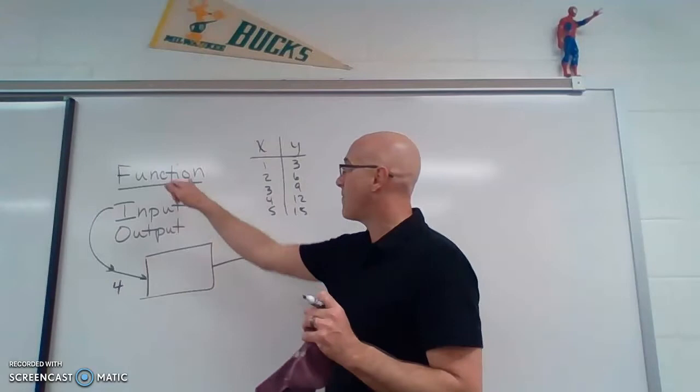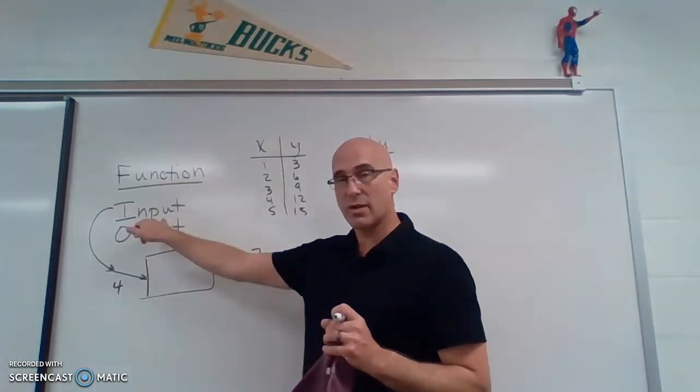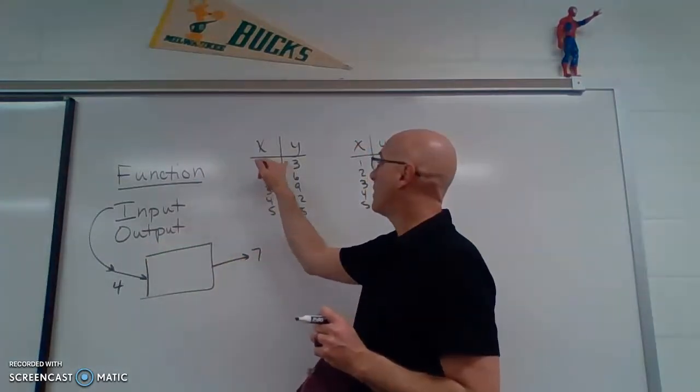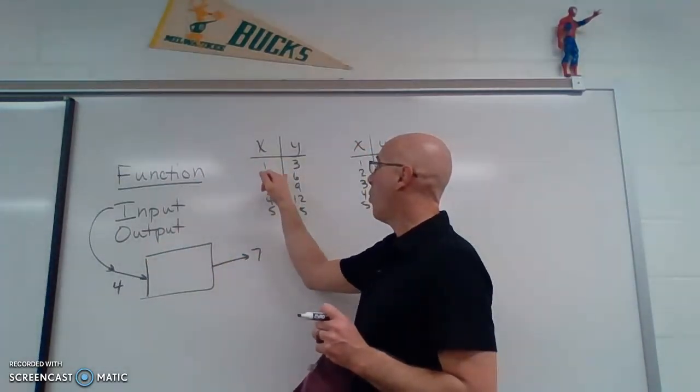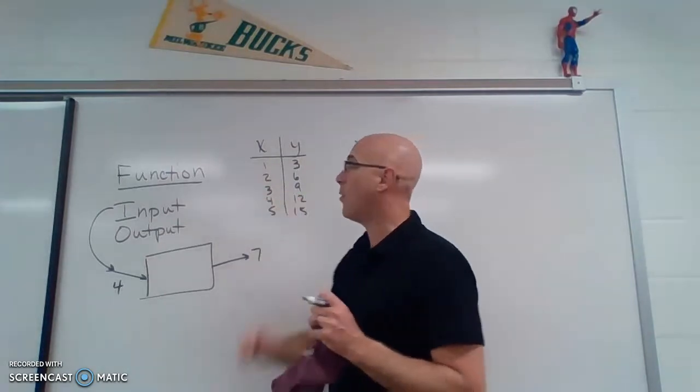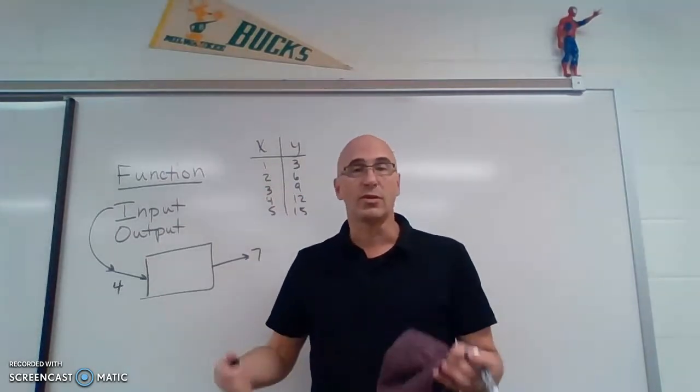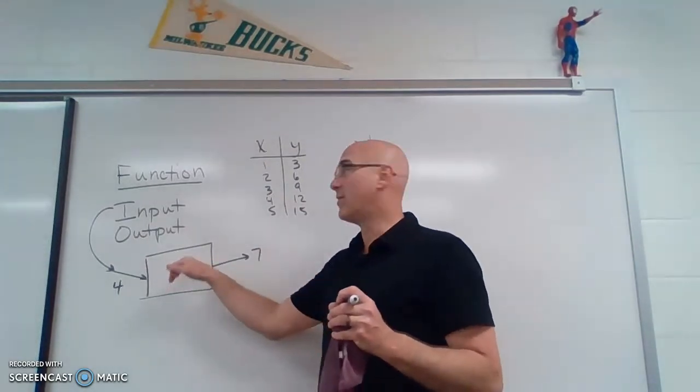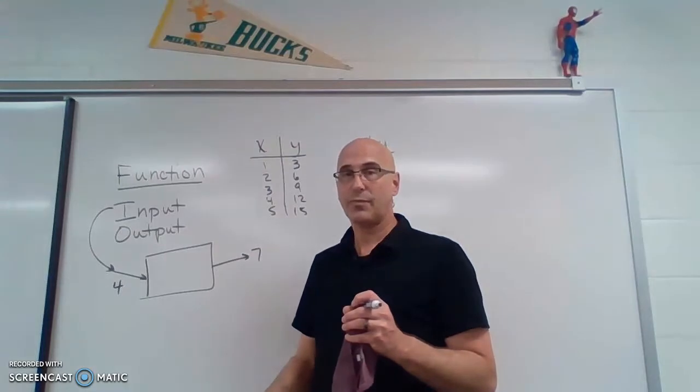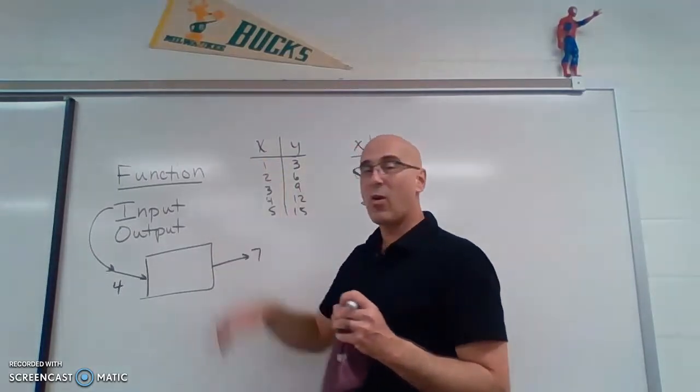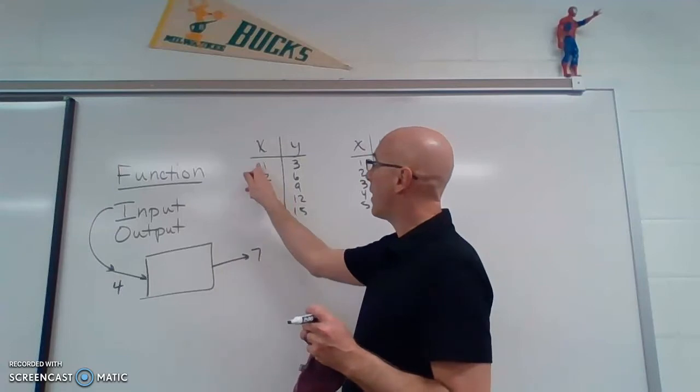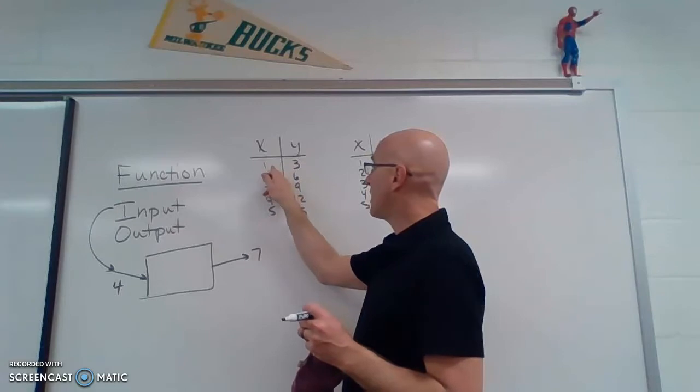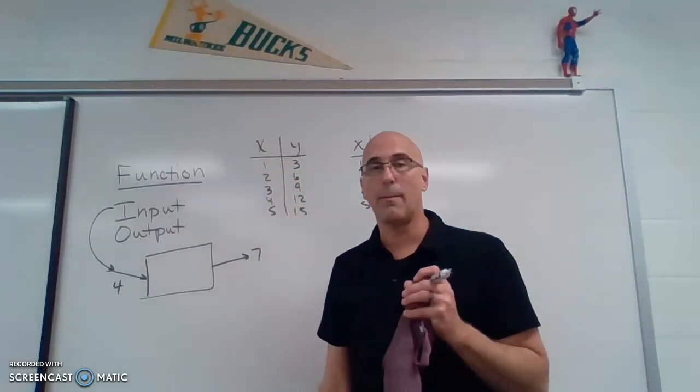Now this is a function because I have numbers that I'm putting in, numbers I'm getting out, and when I put the number in I'm only getting 1 answer. I'm not saying, well for 4 I get 12 and 13. I'm just getting 1 number. Now we can figure out what the rule of this function is. So I can try to look at a correlation. It looks like whatever I put in, my x value, I am getting out, I am taking that value and multiplying it by 3.